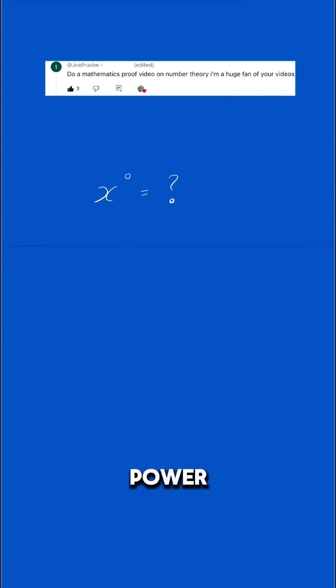When we talk about x to the power of 0, what does that equal? Well, we always say that x to the power of 0 equals 1, or anything to the power of 0 always equals 1.